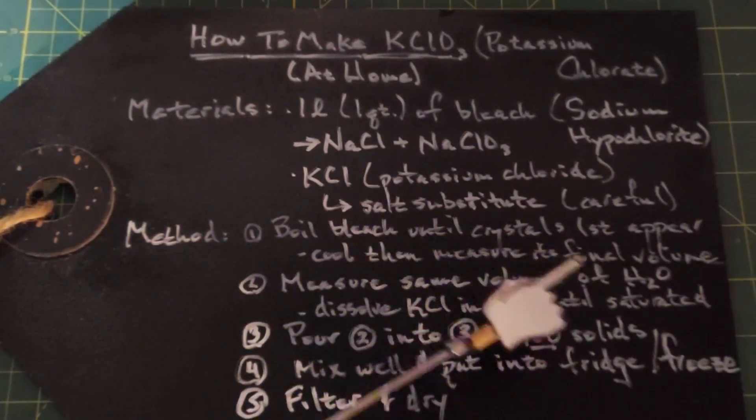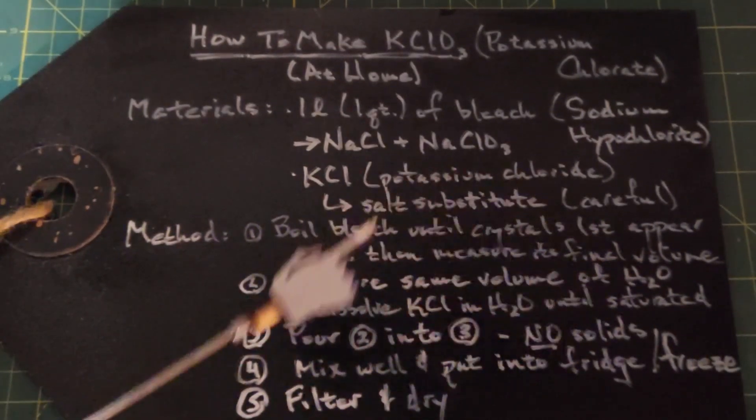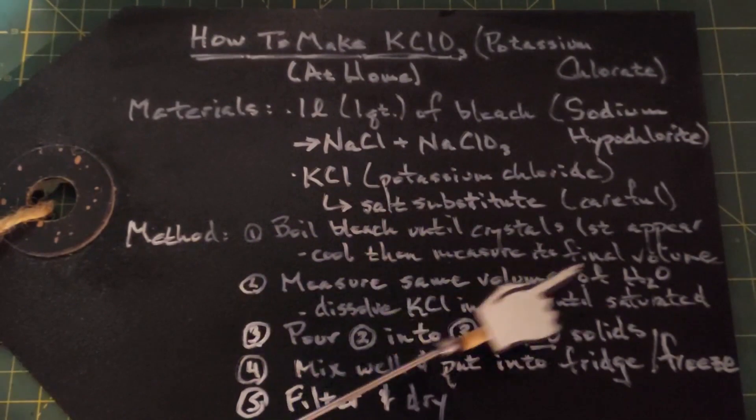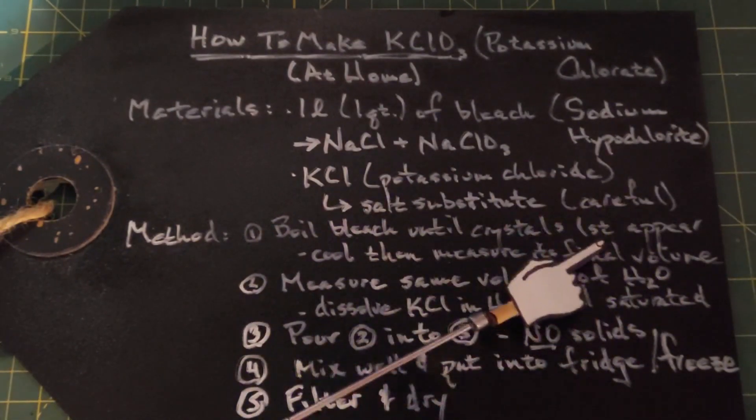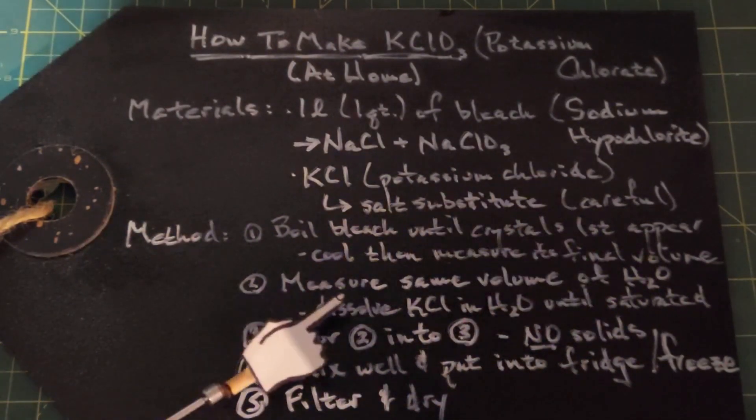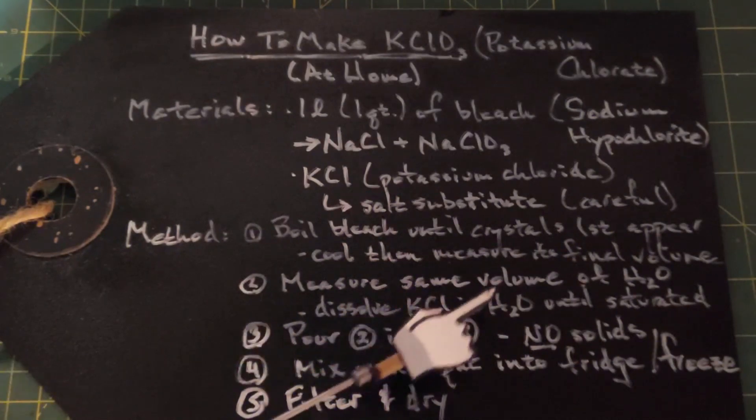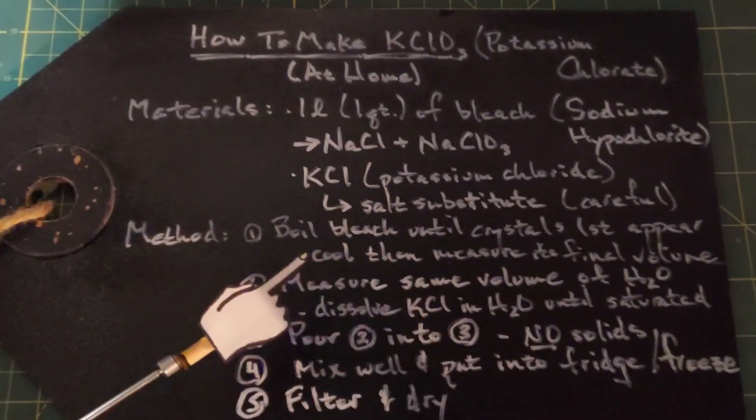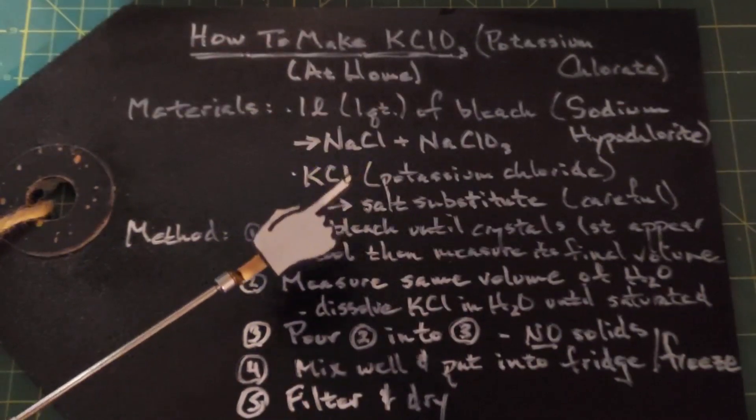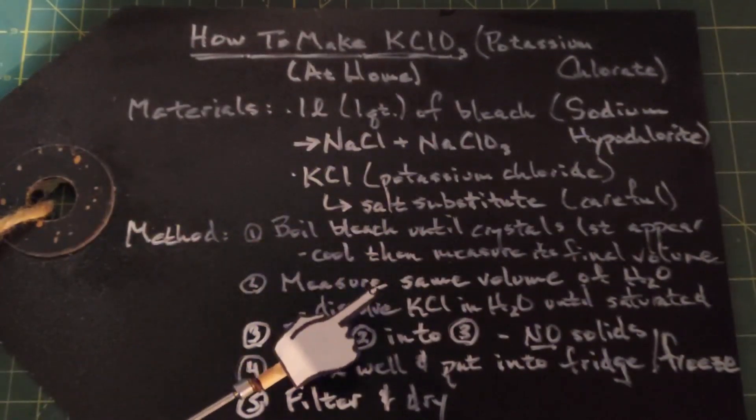Then measure the final volume you have. Then measure the same volume of water as you had in the boiled down bleach, and you want to add the potassium chloride to that water until it's saturated. At this point you have two liquids, one is the boiled down bleach and the other one is potassium chloride and water, and they're the same volume.